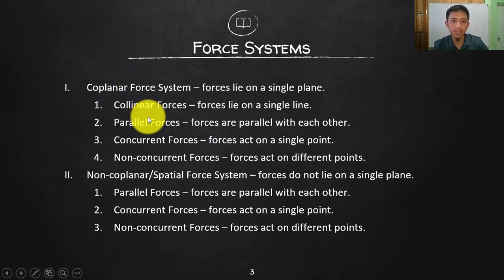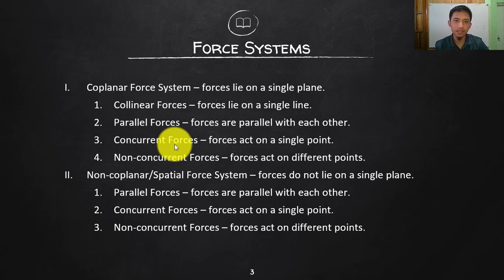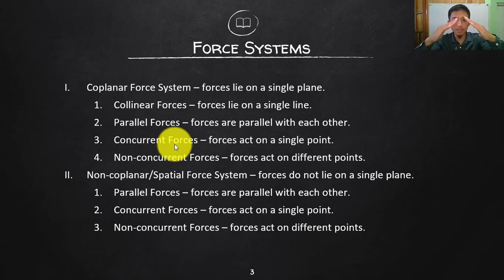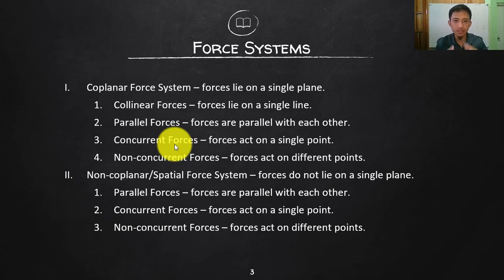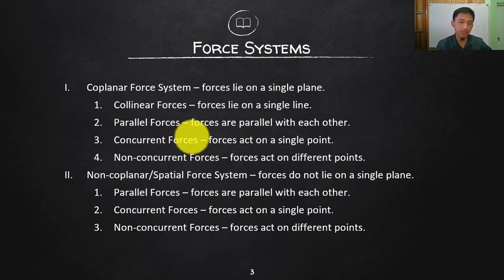The third subtype is concurrent forces — they meet at a single point. The first force and second force, which lie on a single plane, act on the same point, so that is what we call concurrent forces. Parallel forces will never meet, but collinear forces are both parallel and concurrent at the same time, so they belong to a single line.